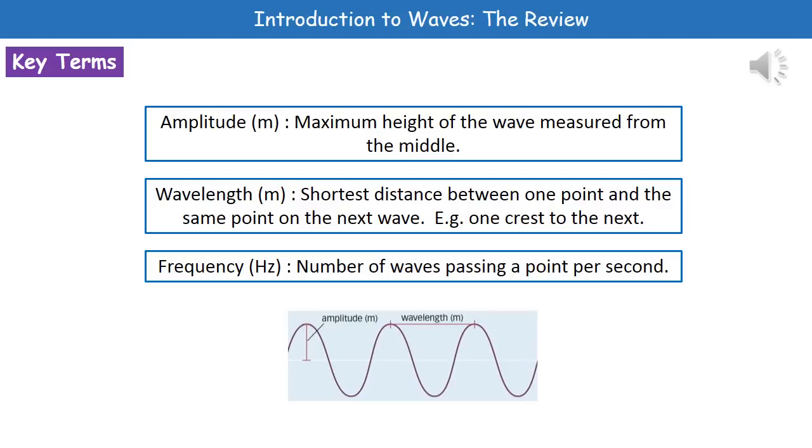The second word is wavelength, and again this is measured in meters. It is the shortest distance between one point and the same point on the next wave. For example, you might measure from crest to crest or from trough to trough. You can see on the diagram at the bottom we're measuring from the top of one crest to the top of the next crest. So that is one wavelength.